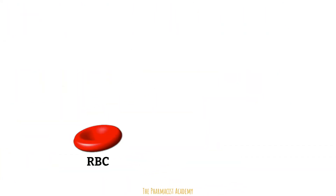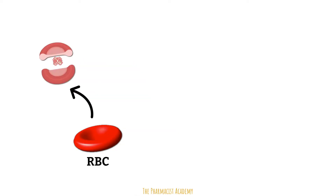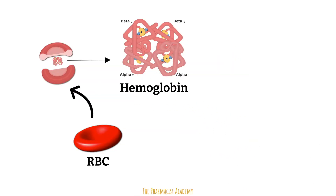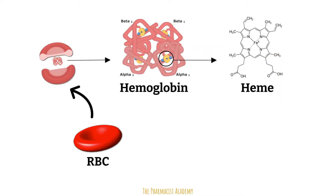It all starts with our red blood cells. If you look inside a red blood cell, you'll find a protein called hemoglobin. Hemoglobin is composed of globular proteins, which is a fancy way of saying spherical protein chains. These proteins are named alpha and beta. Hemoglobin also has something known as heme. Heme is a ring-shaped molecule with an iron atom attached, and it serves as the binding site for oxygen that we breathe in.